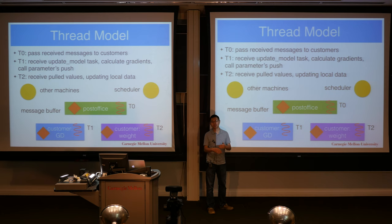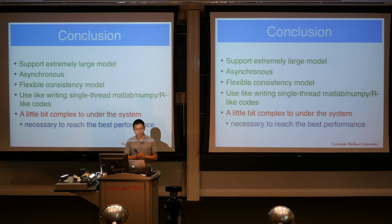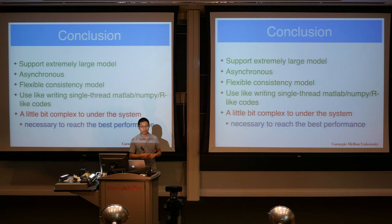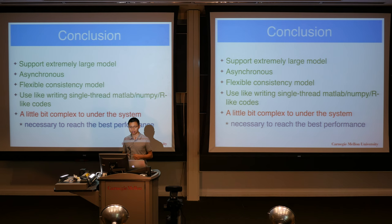This asynchronous system can be more efficient, but you need to carefully guard shared data structures. In conclusion, the parameter server implementation supports extremely large models, is an asynchronous system that can parallelize CPU and network, supports flexible consistency models, and uses global-to-local feature ID mapping so you can write code like single-threaded MATLAB-style. The downside is that it's complex to understand due to multi-threading.